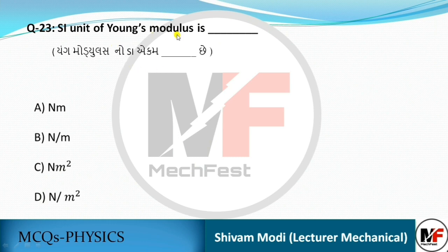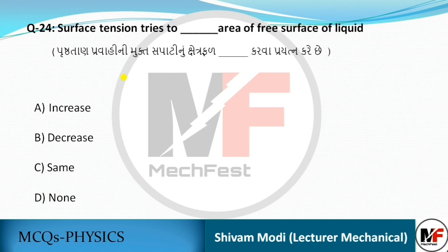The SI unit of Young's modulus (modulus of elasticity) is Newton per meter square — the same as the unit of stress. Surface tension tries to decrease the free surface area of a liquid — so it decreases the area.